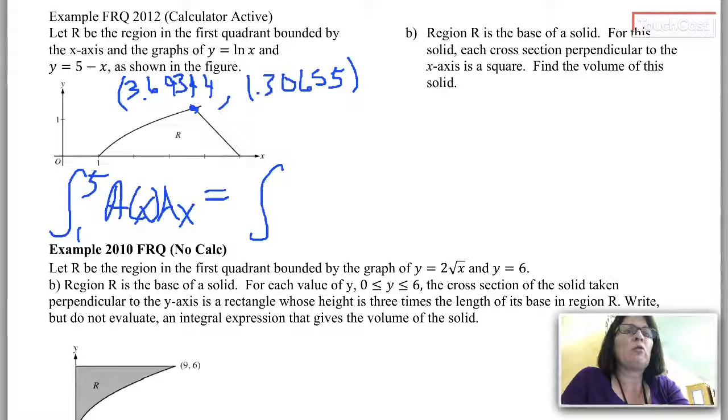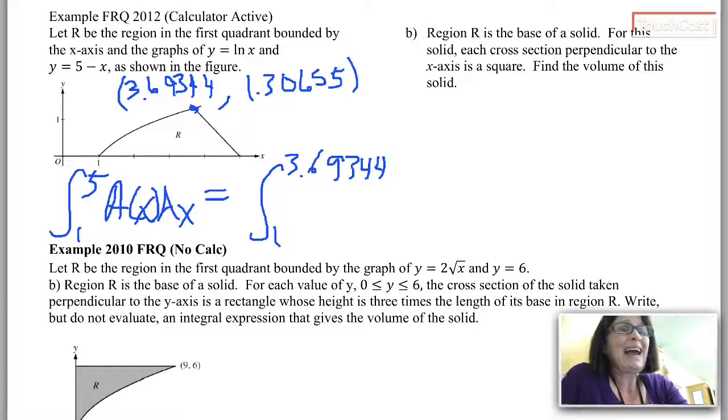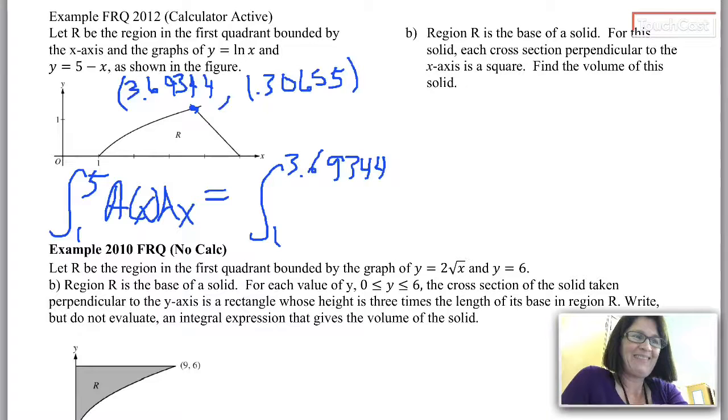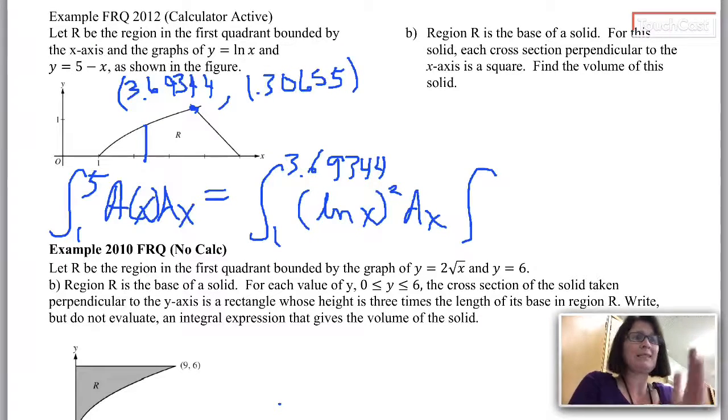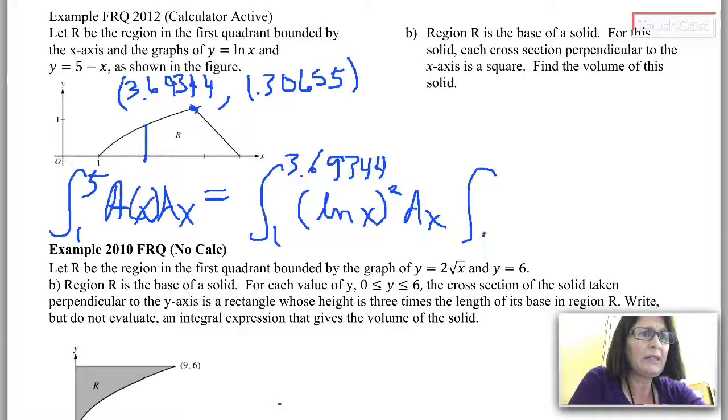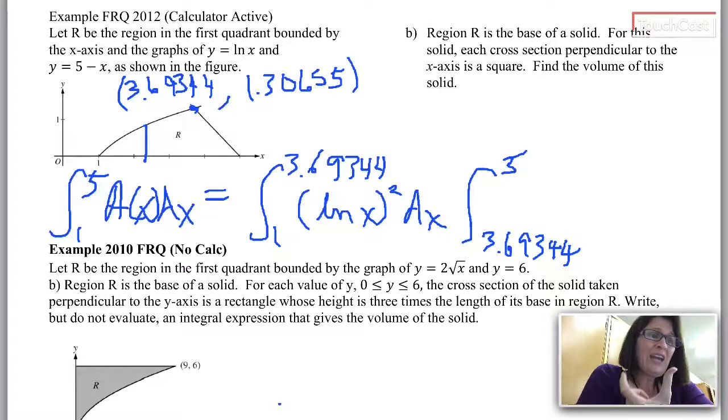I'm gonna integrate from 1 to 3.69344. The area of a square is the side of the square squared, s squared, and in this case s is going to be top minus bottom, so natural log minus 0. So that's natural log of x squared dx. And then right at the place where x equals 3.69, all of a sudden the rule changes. I'm gonna integrate from 3.69344 to 5.